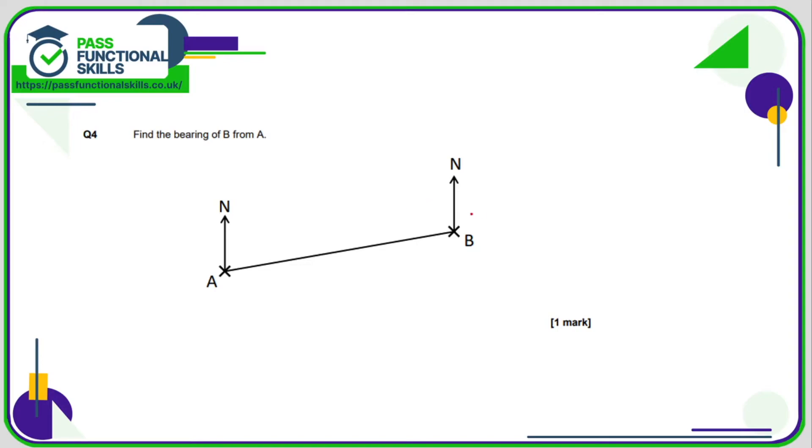The bearing of B from A means we are measuring this angle here. It's less than 90 degrees. So if we get our protractor out and measure this angle, that is 80 degrees. The bearing is going to be 080 degrees.